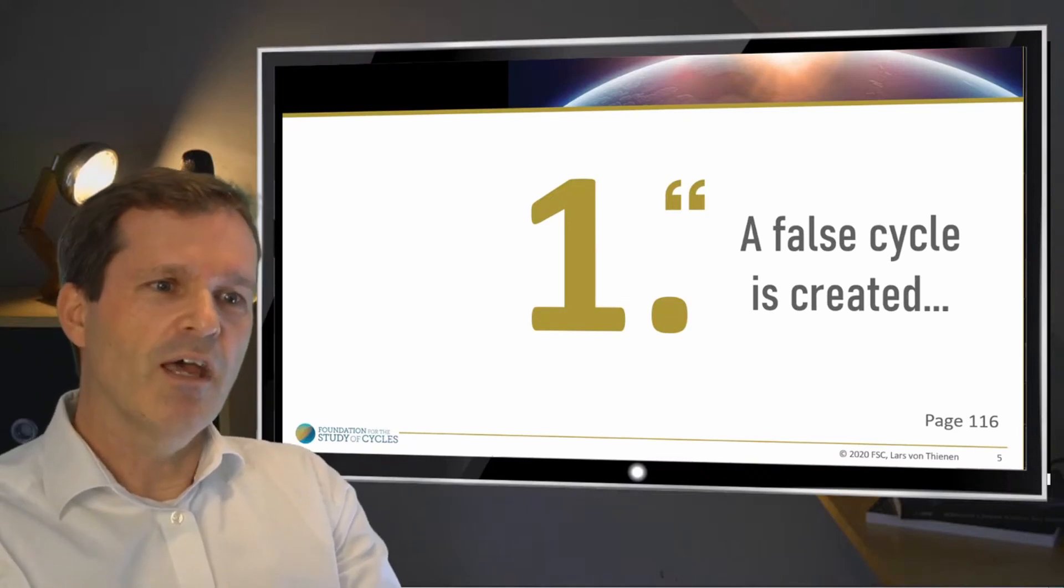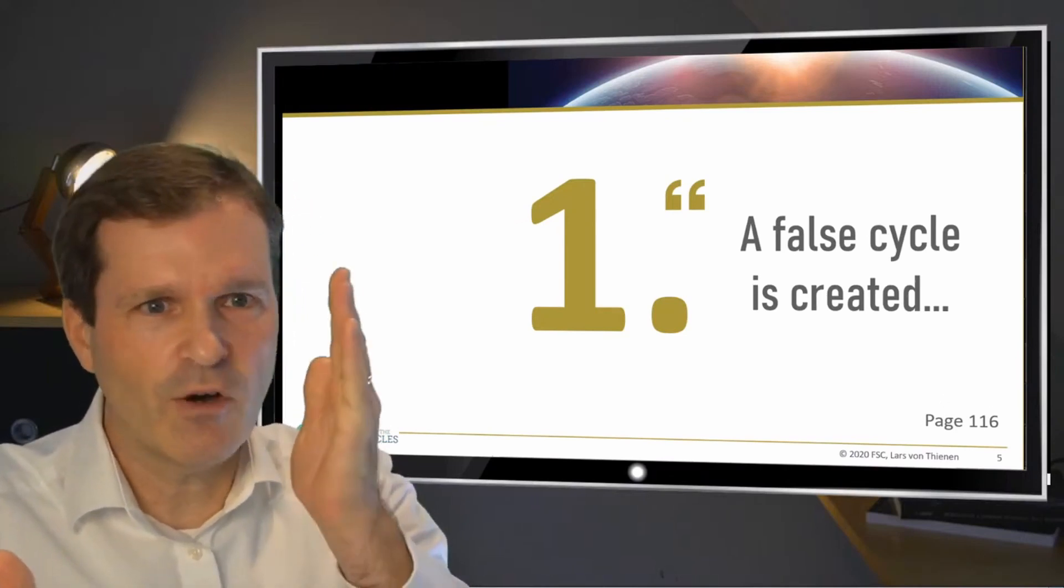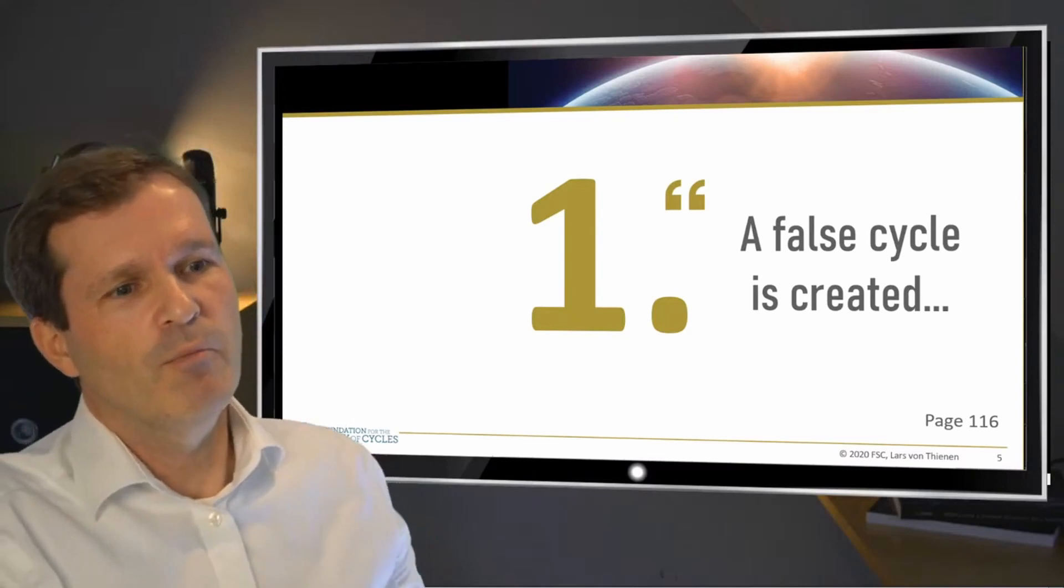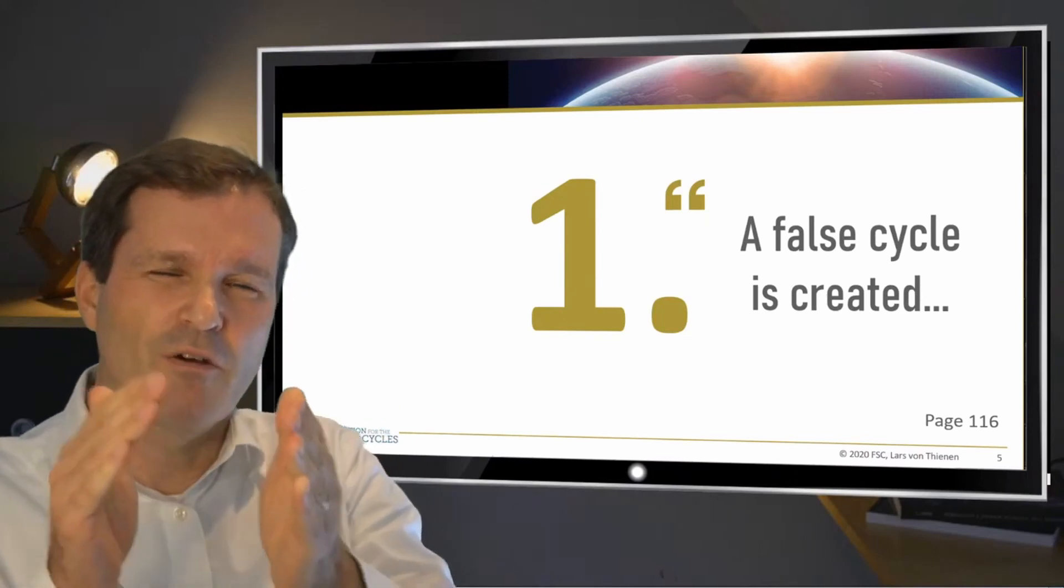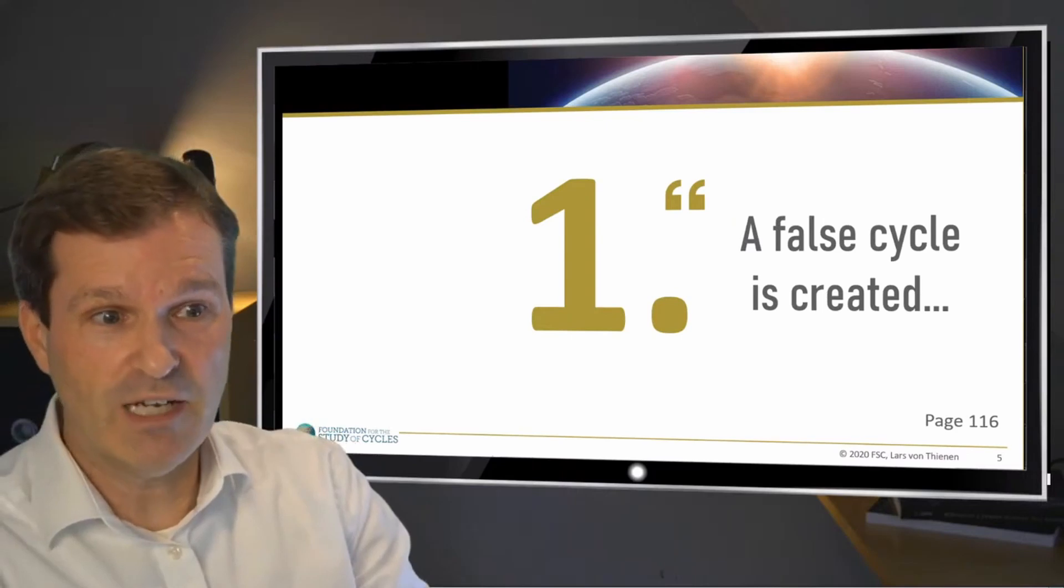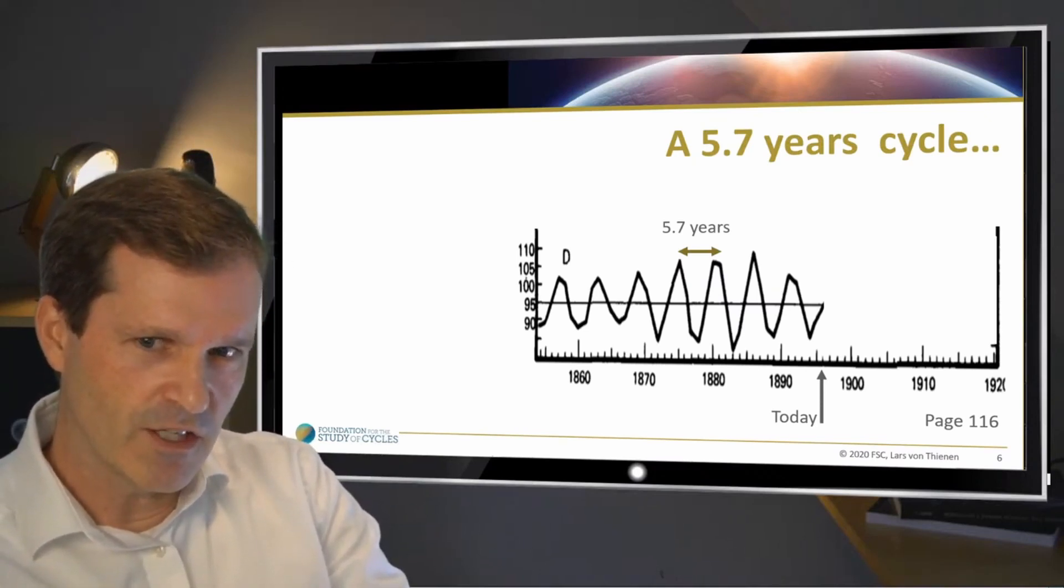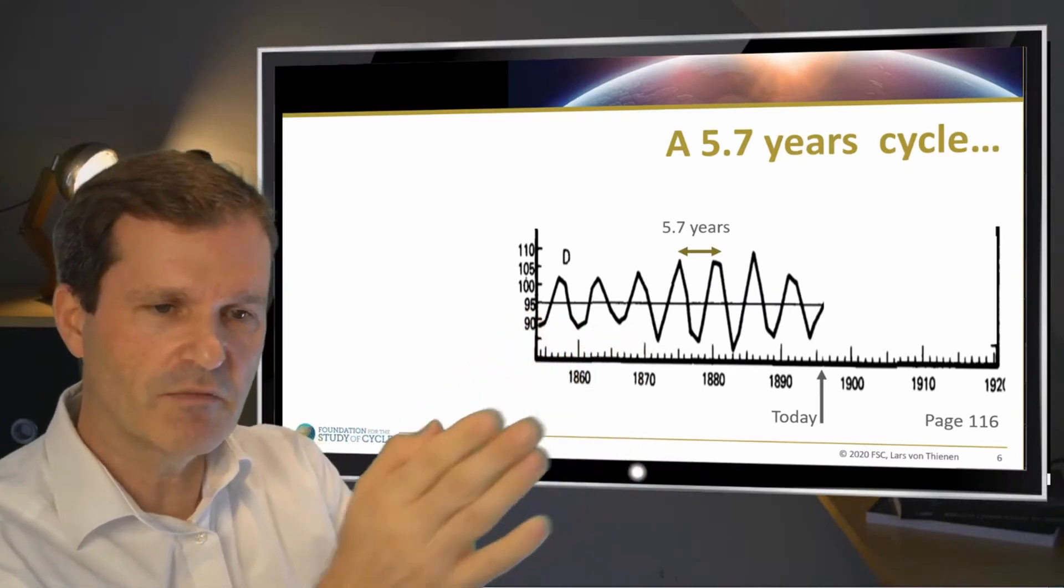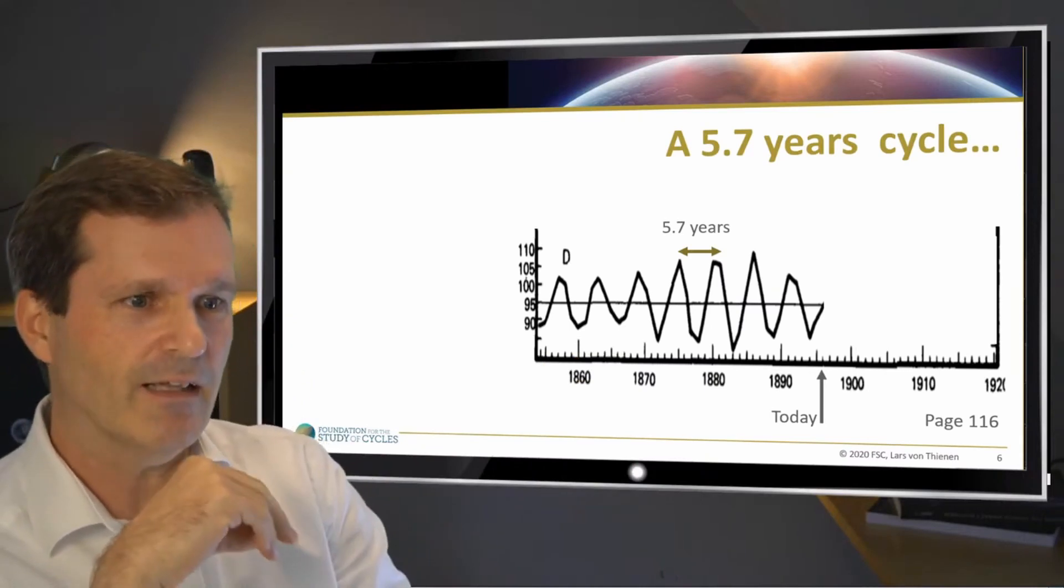This topic is important because in today's world, it's sometimes much too easy to find a cycle. You click on a tool, on a button, on an indicator, on whatever application, and you see a cycle. Boom, there it is. But in today's world, it's even more important that you get an idea of how to differentiate between real valid cycles and false cycles. So Dewey dedicated some topics on what is a false cycle.